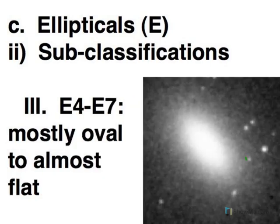And then E4 to E7, the most elliptical of the galaxies. So the most distinction from being round, so these are quite flattened. So these are the ways we categorize elliptical galaxies.